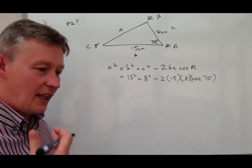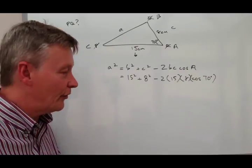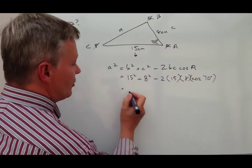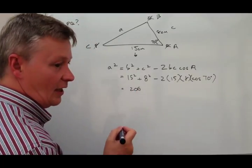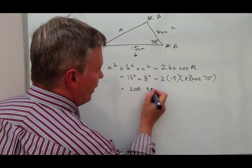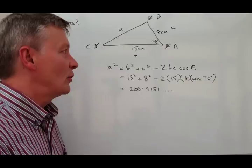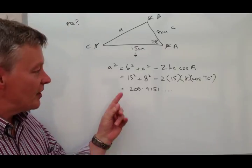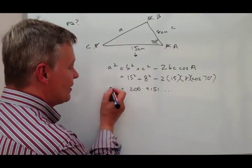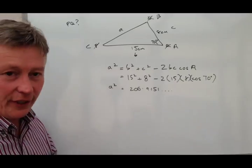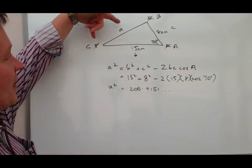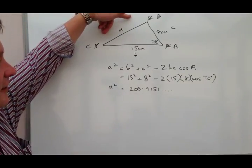Now, if you plug that into your calculator and calculate that through, that will give you 206.9151 dot dot dot dot. OK. Now, bearing in mind that this is the value of A squared, so just be very, very careful at this point, that this isn't 206 centimeters.